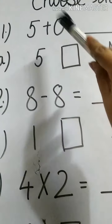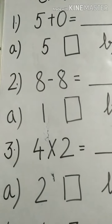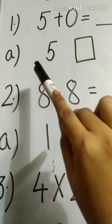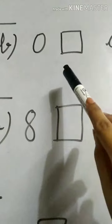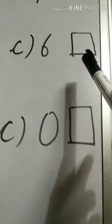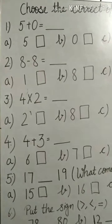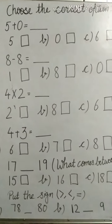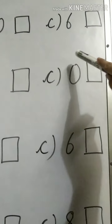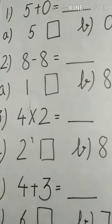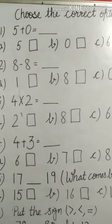The first question is 5 plus 0. We need to add 5 and 0. I am given with options: in part A it is written 5, in part B it is written 0, and in part C it is 6. What I need to do is calculate in my mind what 5 plus 0 comes out to be, and out of these three, whatever my answer is, I will put a tick mark in that box — in one box only.